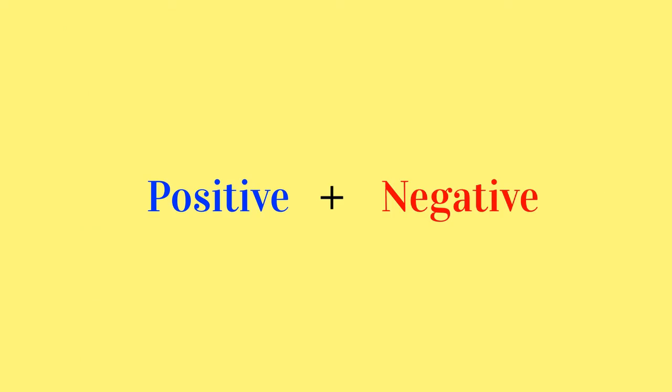But when the second number is a negative number, addition can be a little more tricky. When a plus sign and a negative sign are next to each other, the plus sign disappears, leaving just the negative sign.